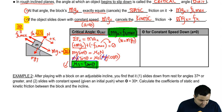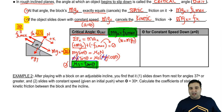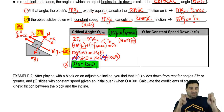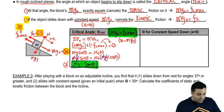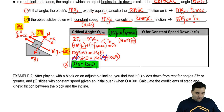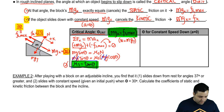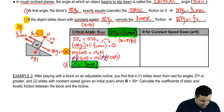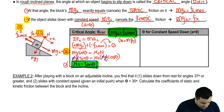In physics this is called an elegant solution — a very simple answer with just two variables. If you want to find mu-static, you find it by taking the tangent of the critical angle.